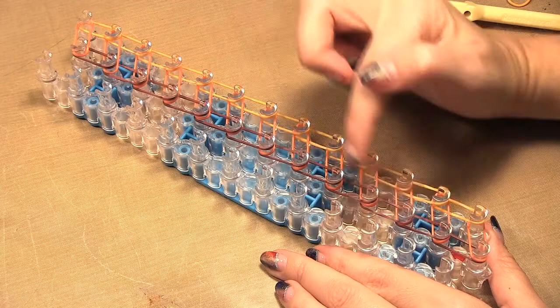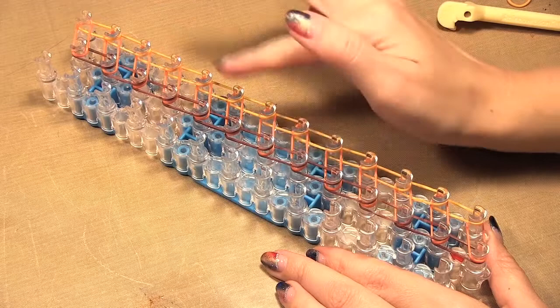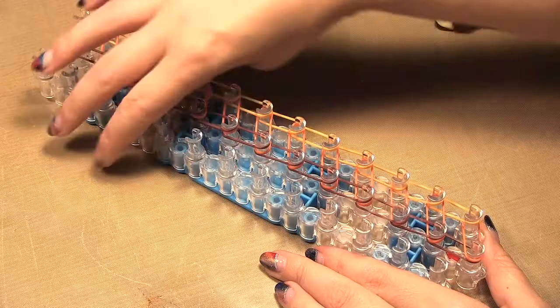So I finished putting on all my elastics. You can see the burgundy color going up this side, then I have the darker orange across and then the lighter orange along this side.